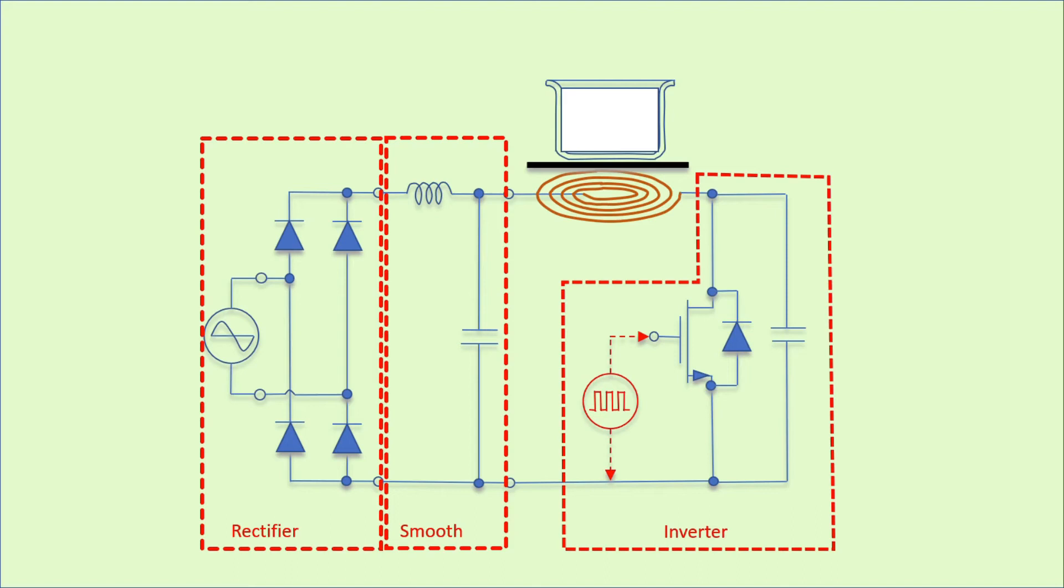It opens and closes with a very high frequency. With a fast switching signal, the IGBT makes the current in the inductor coil oscillate with a very high frequency, and so does the magnetic field on the inductor.